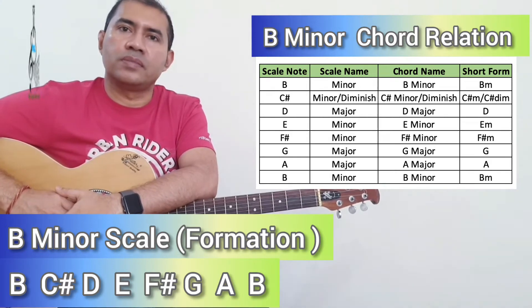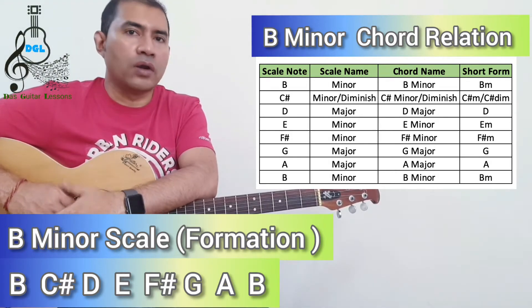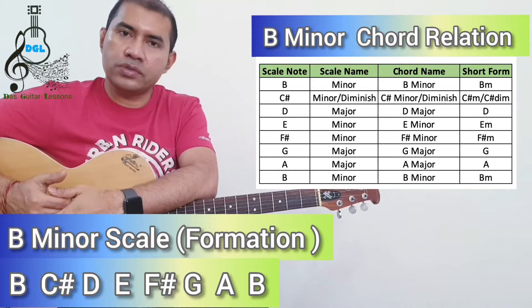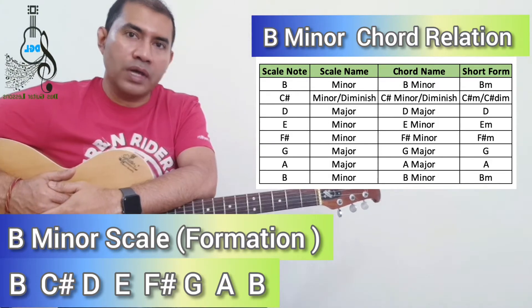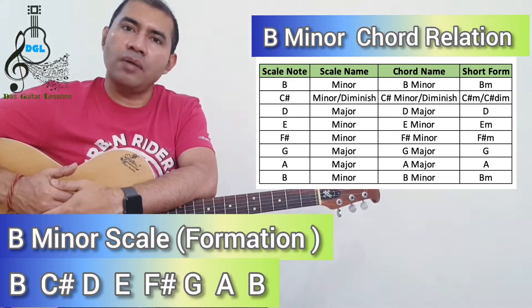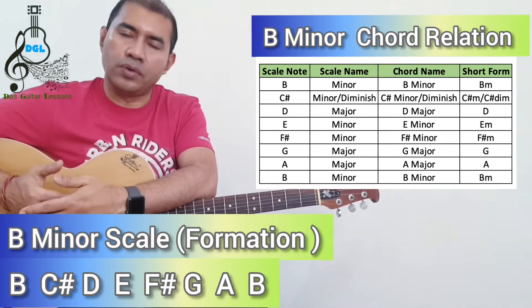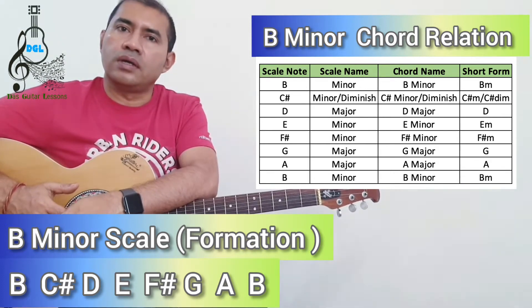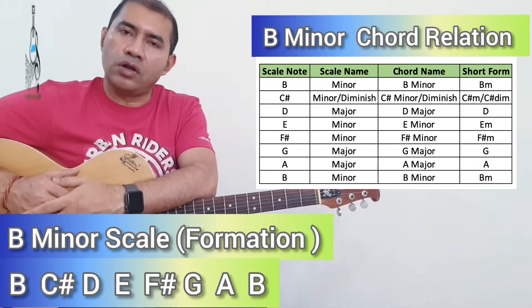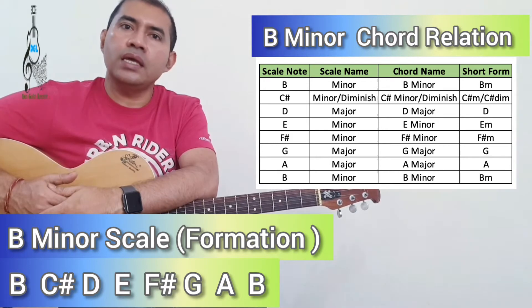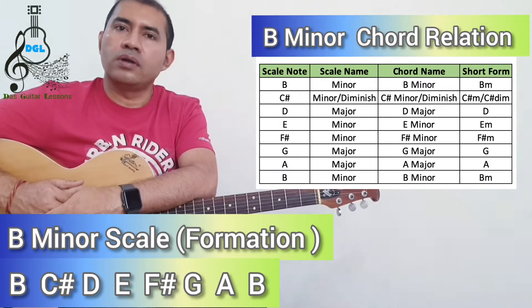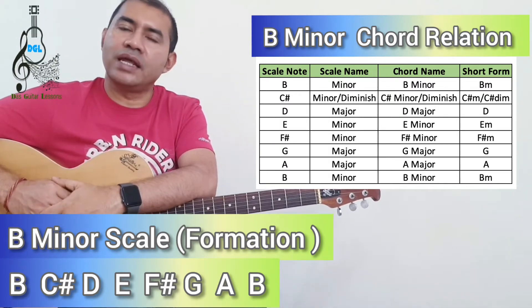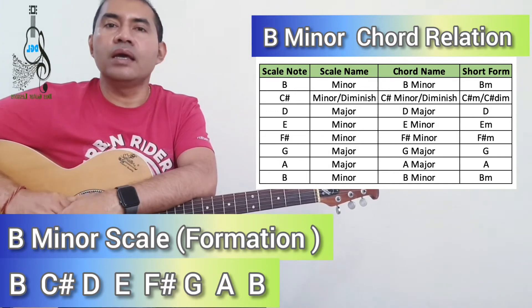We are also going to use the F sharp chord and the C sharp chord. Also, the B minor scale is related with the D major scale.